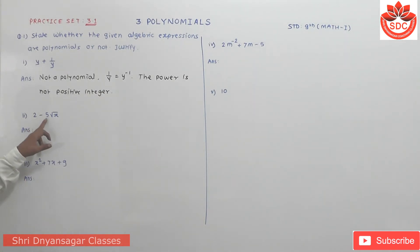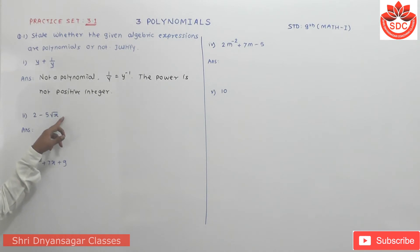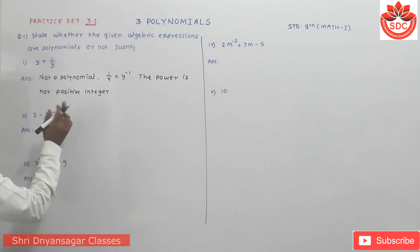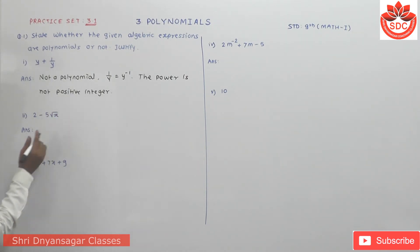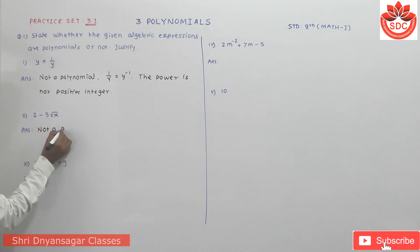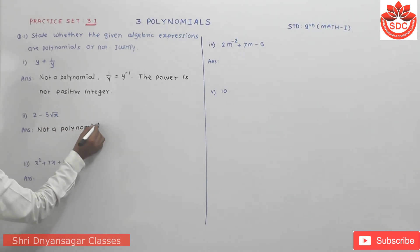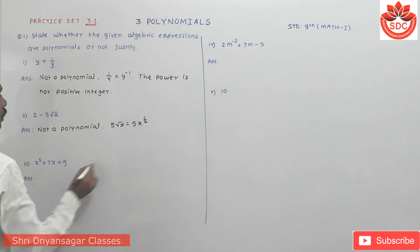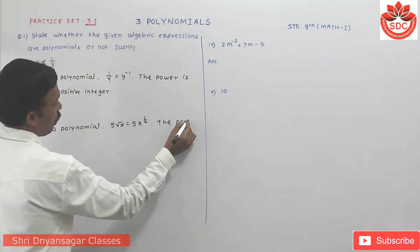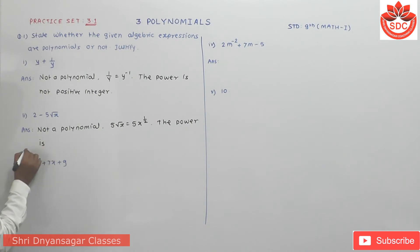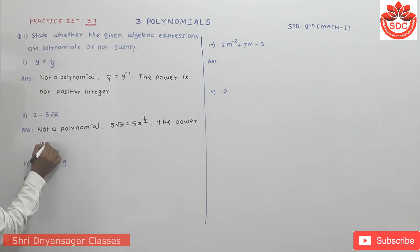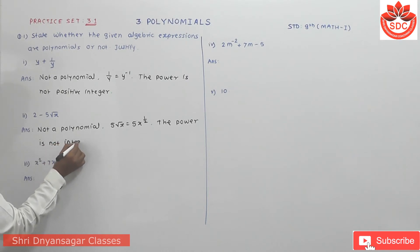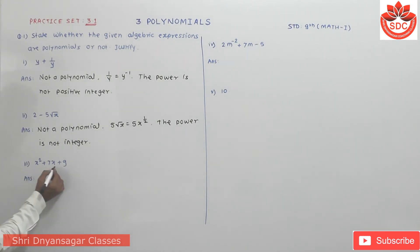Second expression: 2 − 5√x. Here √x means x^(1/2), which is not an integer power. Therefore this is not a polynomial. Because in 5√x we write x^(1/2), and the power is not an integer.